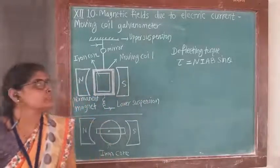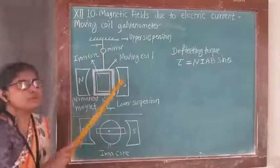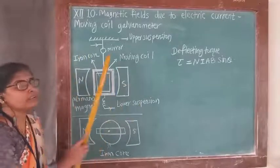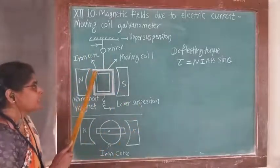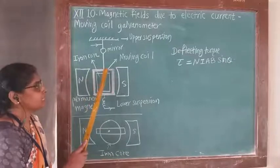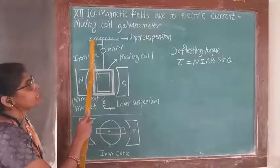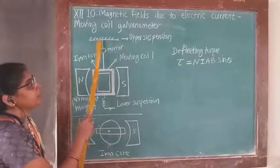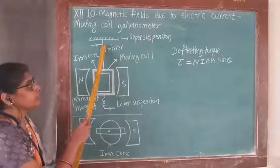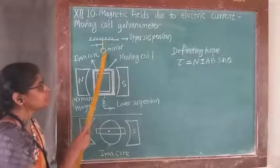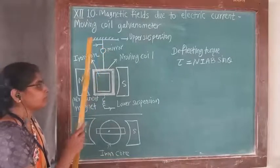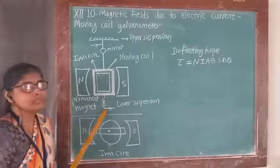In today's lecture we will discuss about the construction of the moving coil galvanometer. Here is the diagram of the moving coil galvanometer. It consists of a current-carrying coil bound on a loop. This current-carrying coil is suspended or pivoted at a rigid support. The upper suspension is not a helical spring but a suspension fiber, and this suspension fiber is provided with a small mirror.